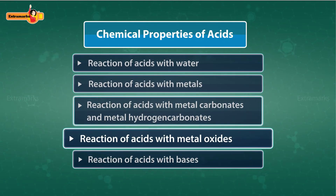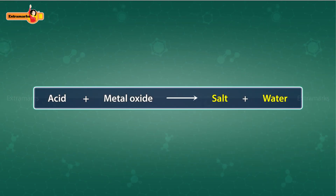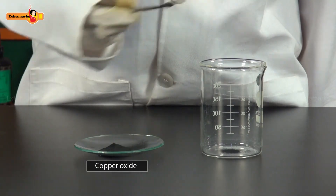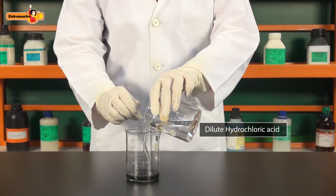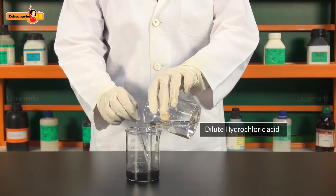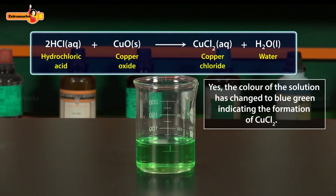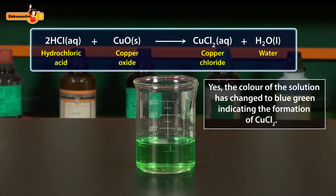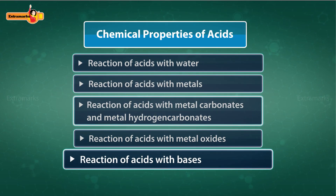Acids react with metal oxides also. The products of this reaction are salt and water. Let's perform an activity: take a small amount of copper oxide in a beaker and add hydrochloric acid to it with continuous stirring. Notice the change — the color of the solution has changed to blue-green, indicating the formation of copper(II) chloride.